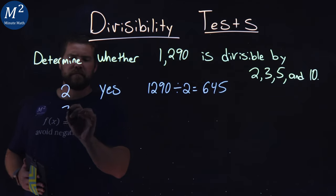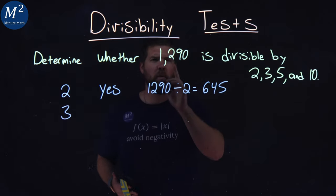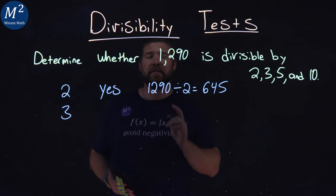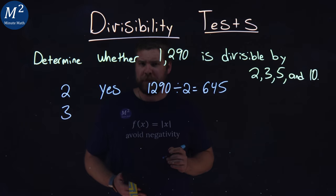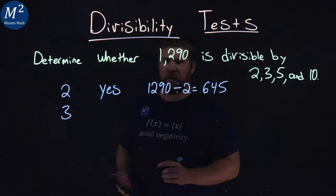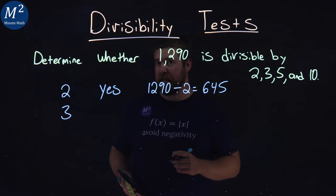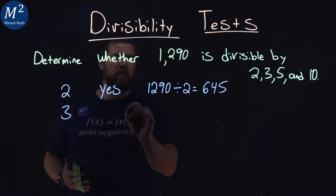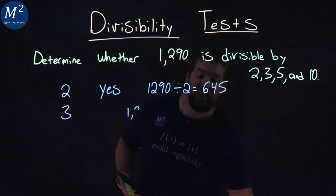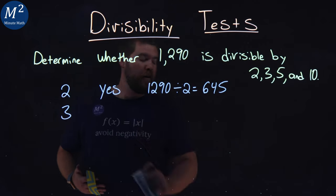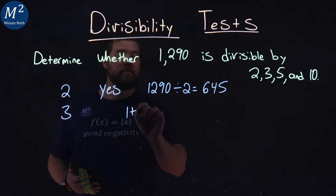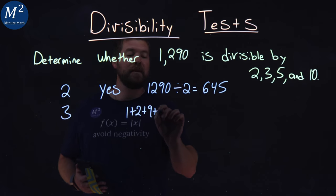Now, what about 3? Is 1,290 divisible by 3? Well, the trick with 3 is to add up the digits. So we take 1, let me erase that here.